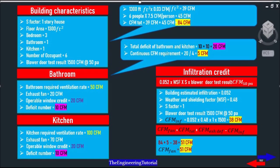And lastly infiltration credit. To calculate the infiltration credit we will use this equation. 0.052 multiply by WSF multiplied by S multiplied by blower door test result. The building estimated infiltration is 0.052. The weather and shielding factor is 0.48 and the S factor is 1. And the blower door test result is 1500 CFM at 50 Pa.